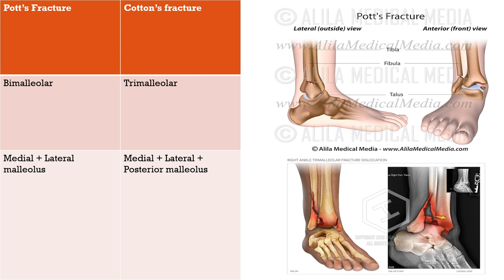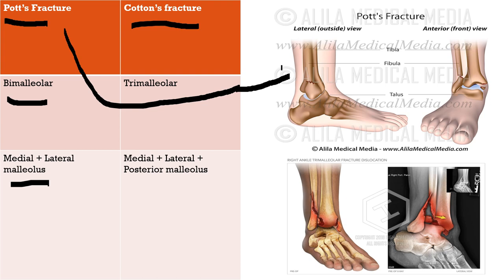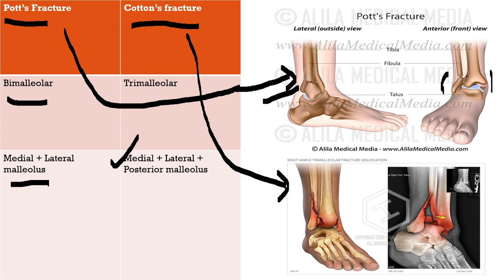The distinction between Pott's fracture and Cotton's fracture is important for MCQs. Pott's fracture is a bimalleolar fracture involving the medial and lateral malleolus — the posterior malleolus is intact. Cotton's fracture is a trimallular fracture involving all three malleoli: medial, lateral, and posterior.